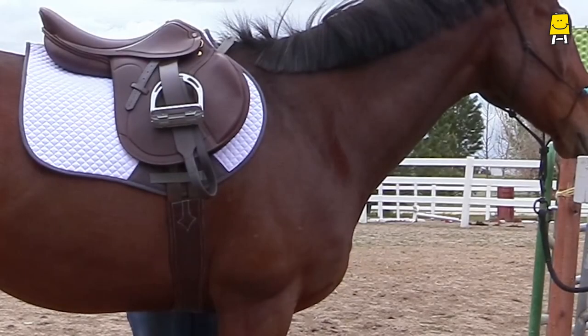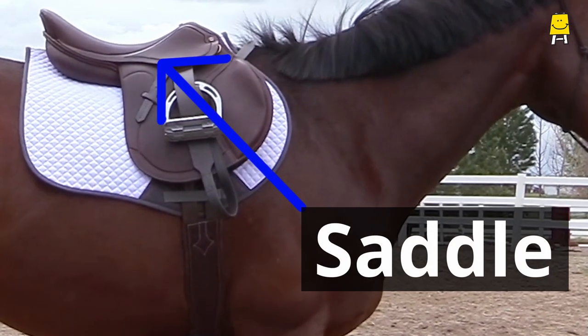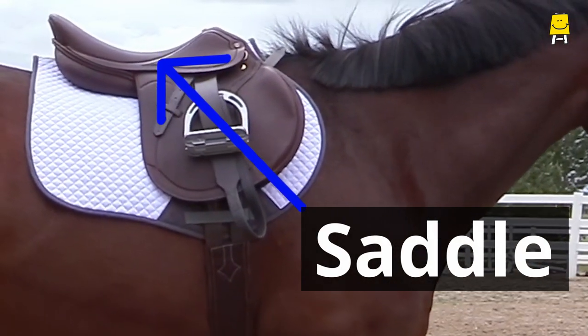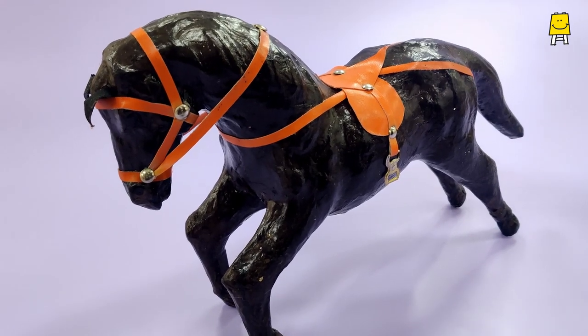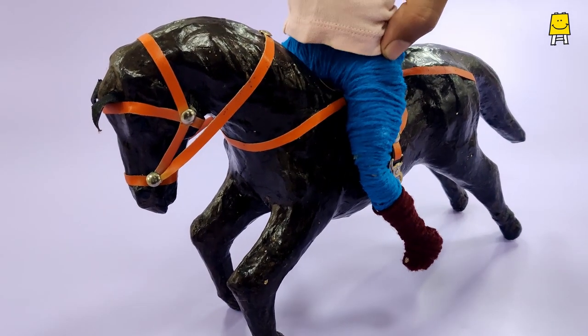A saddle is a curved seat fastened on the back of a horse. When you sit on a horse, the seat bones fit in the saddle firmly.